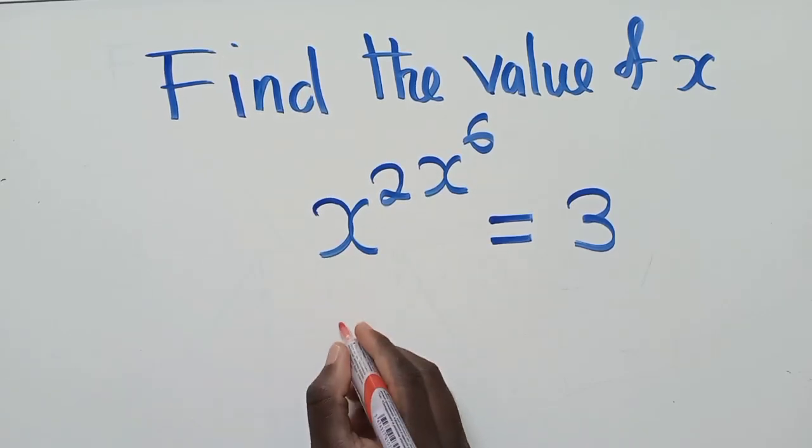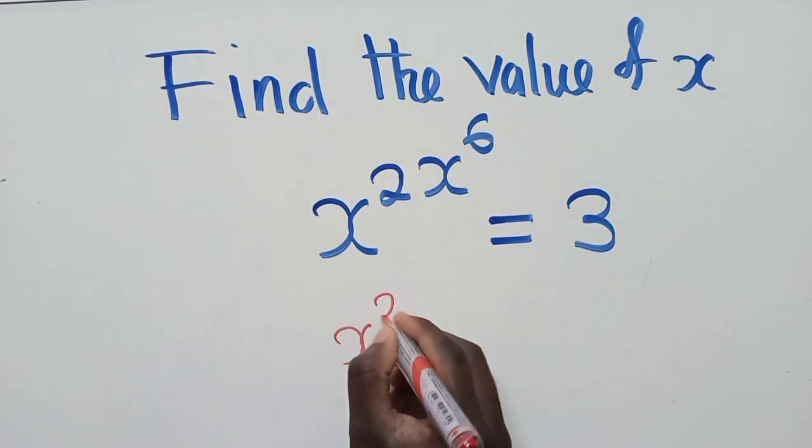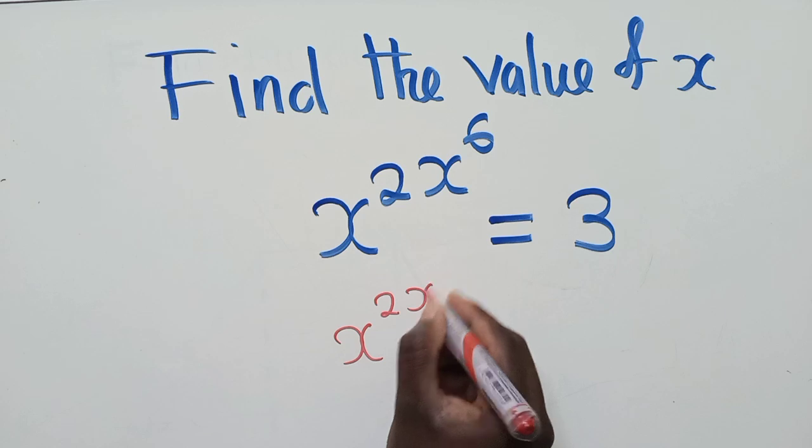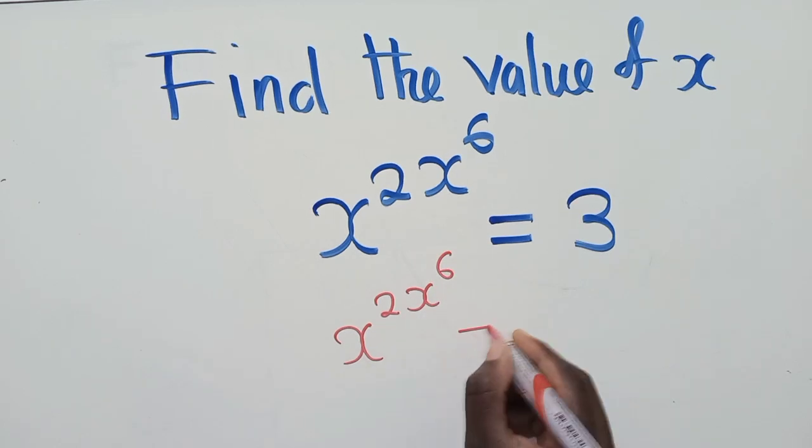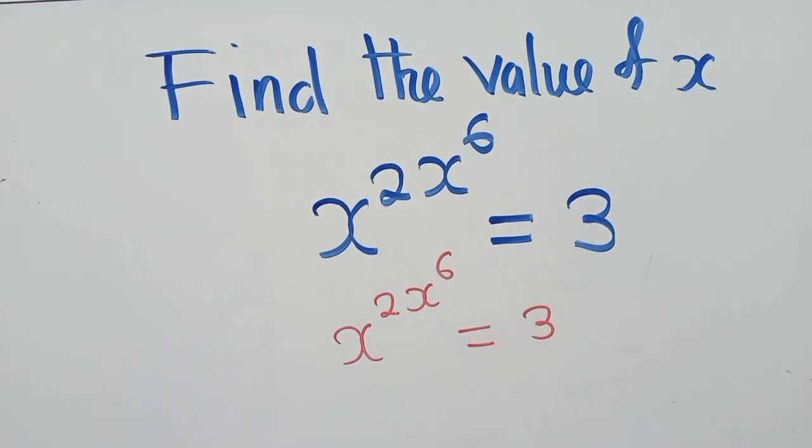Alright, so to answer this question we first copy. So x power 2, x power 6 is equal to 3 there.